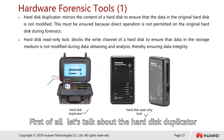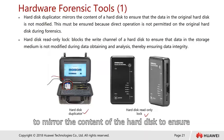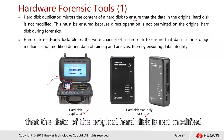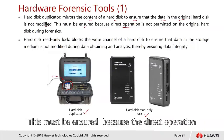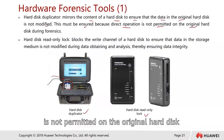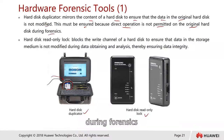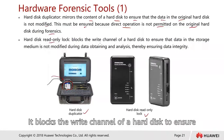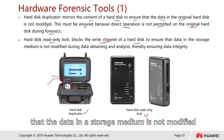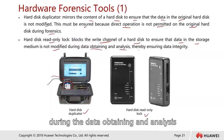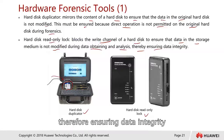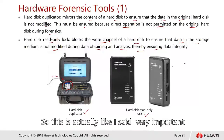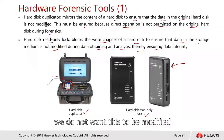The hard disk duplicator mirrors the content of the hard disk to ensure that the data of the original hard disk is not modified. Write operations are not permitted on the original hard disk. The hard disk read-only locker blocks the write channel of a hard disk to ensure that the data in a storage medium is not modified during data obtaining and analysis, ensuring data integrity. We do not want the disk to be modified.